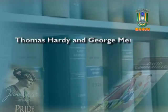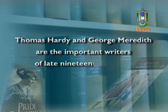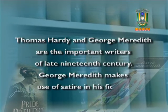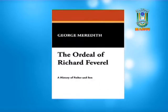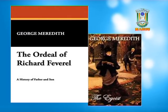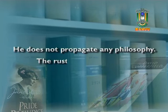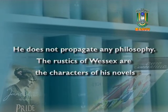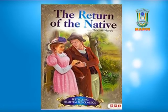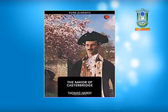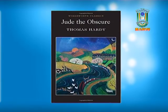Thomas Hardy and George Meredith are important writers of the late 19th century. George Meredith makes use of satire in his fiction; man's spiritual growth is the subject of works like The Ordeal of Richard Feverel and The Egoist. Thomas Hardy has a completely different outlook on life. He does not propagate any philosophy. The rustics of Wessex are the characters of his novels, and he presents their inner soul without affecting the narrative. The Return of the Native, The Mayor of Casterbridge, and Jude the Obscure are some of his remarkable novels.